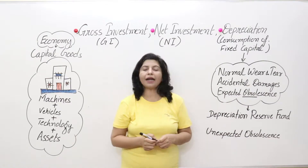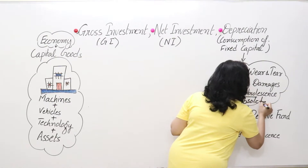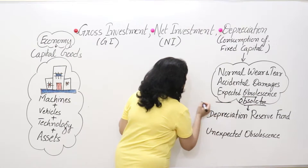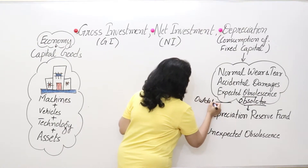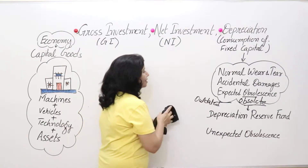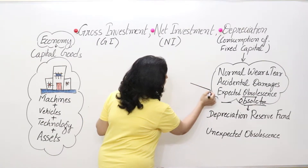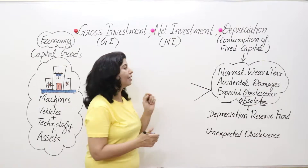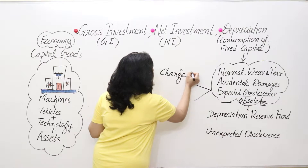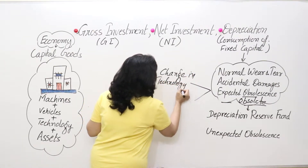What is obsolescence? Obsolescence comes from the word obsolete — obsolete means outdated, that is no longer in demand. A thing becomes outdated due to two reasons: change in technology and change in demand.